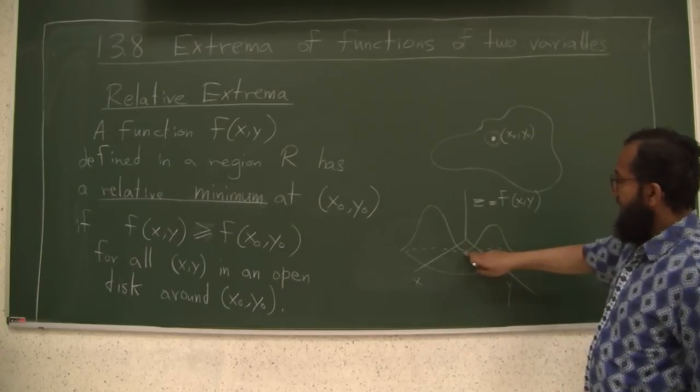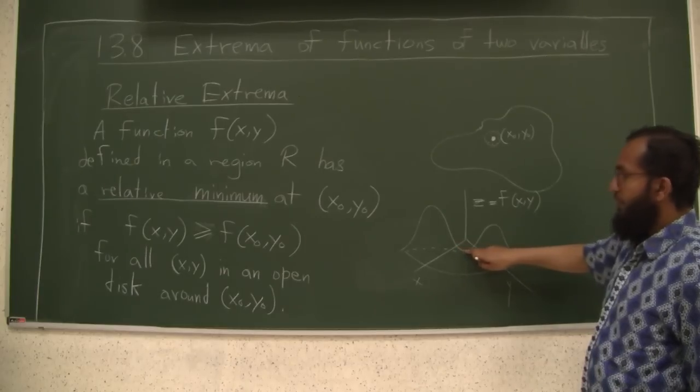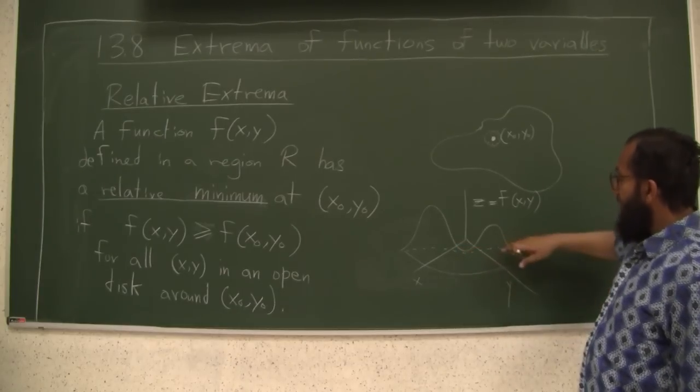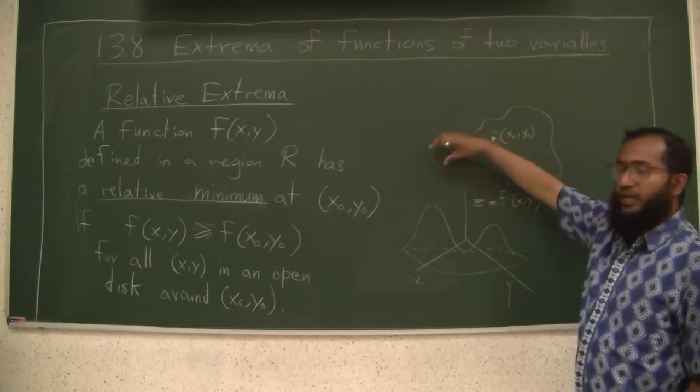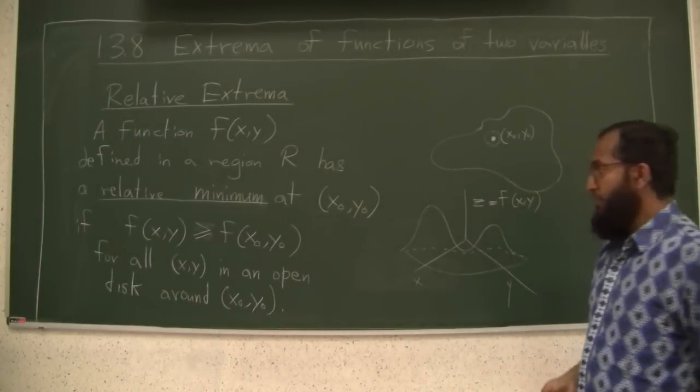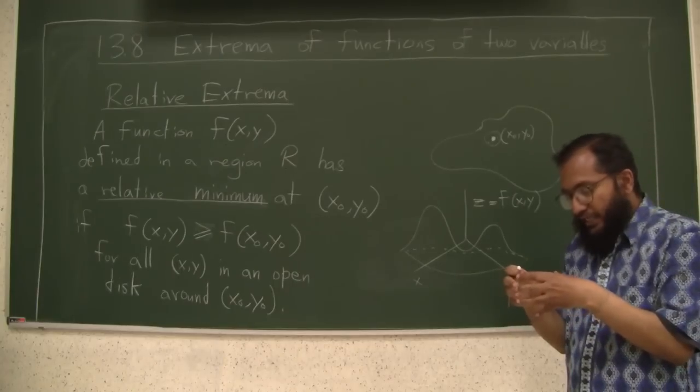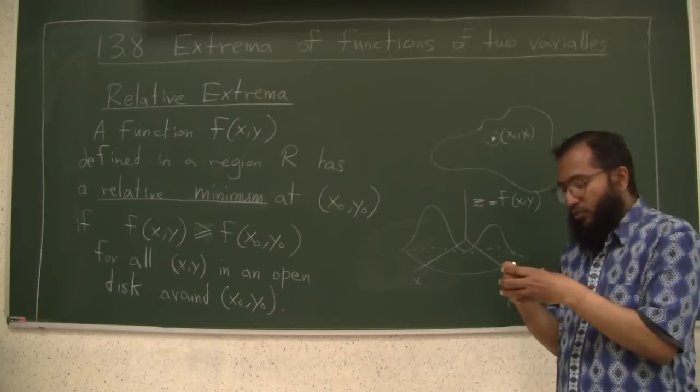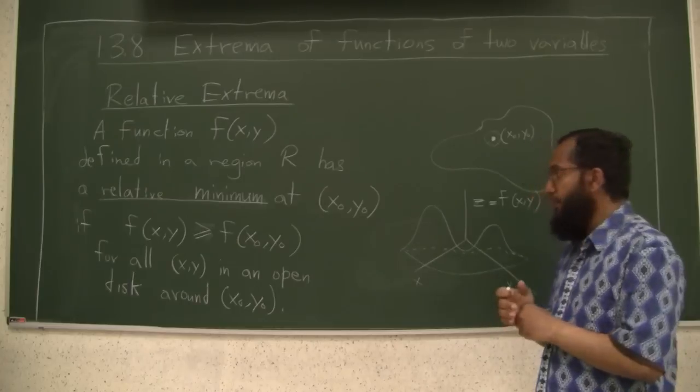And similarly, like the low point here will be a relative minimum. But in the region there might be even bigger relative minimums than other relative minimums. There might be bigger relative maximums and so on and so forth. So the idea of relative is that locally you can find a tiny area around the point where that guy is the winner.